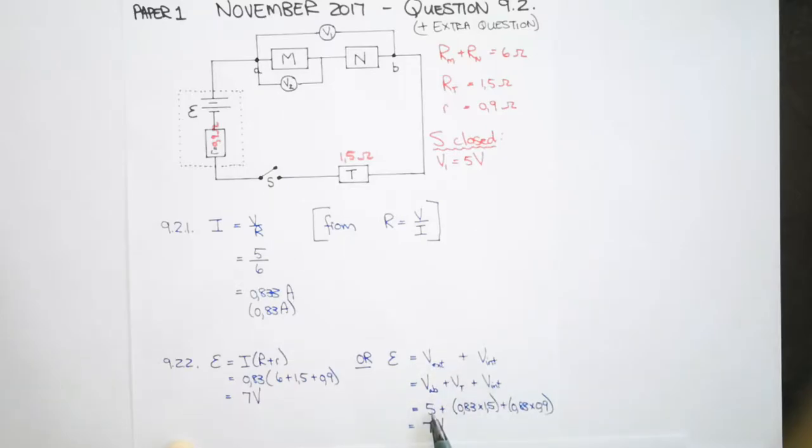So the volts between A and B is 5 volts. I calculate the volts across T because I have V equals I times R for T. And then your internal volts, your lost volts is I times little r. When you add these up, you get 7 volts, and the same as this value over here. You might get 6.99 something if you use the rounded off value for your current strength.